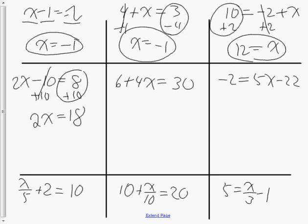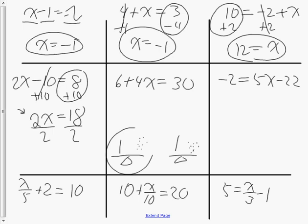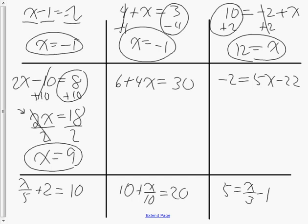I've gone from two steps to one step — I now have just the coefficient. This says 2 multiplied by x. The opposite of multiplication is division. If I had two x's and divided them into two groups, I'd have one in each group. And if I had 18 and divided into two groups, I'd have 9 in both. Numerically, I divide both sides by 2 to get x equals 9.